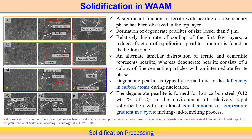A significant fraction of ferrite with pearlite as the secondary phase is observed in the top layer. In this case, pearlite is the secondary phase in the top layer. Formation of degenerate pearlite is also observed, with grain size less than 5 µm.